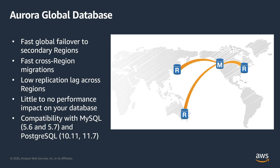If you wanted a solution where you wanted to have a fast global failover to a secondary region in case something happens to the primary region — performance issues, availability issues, or anything else — you can take advantage of global databases to do just that. We are replicating the global database using a physical replication technology, which lets you recover the database in a secondary region literally within minutes. Our tests have shown that the recovery of the secondary region database is usually under a minute.